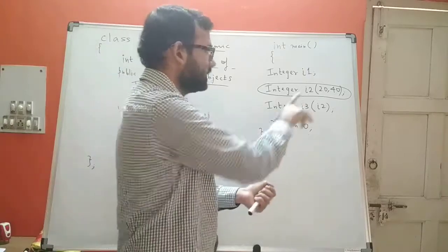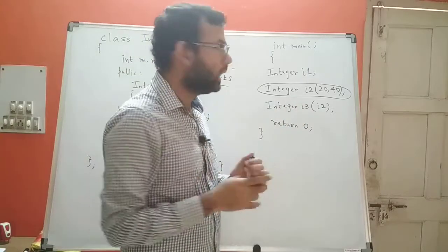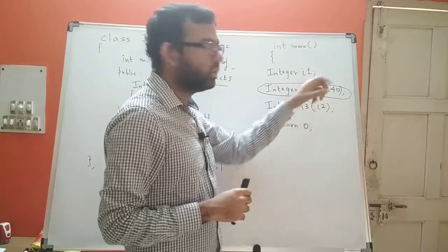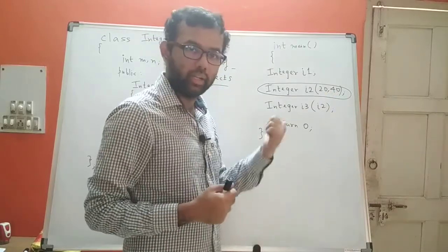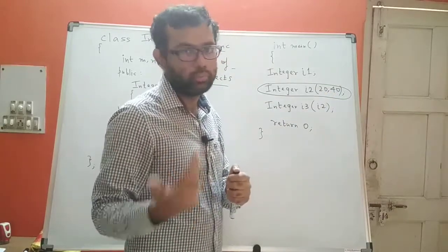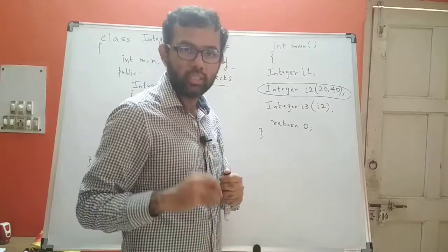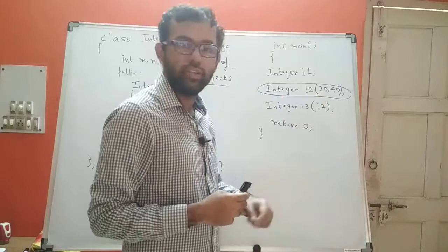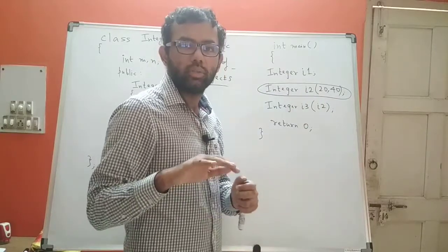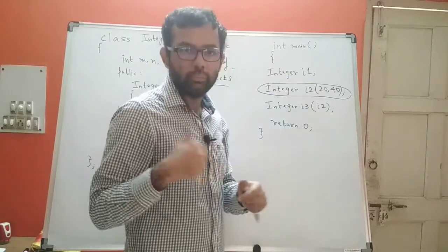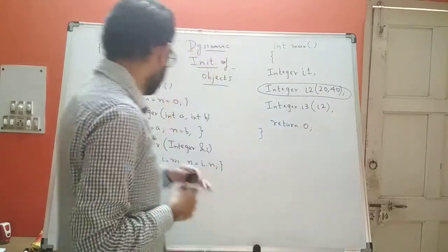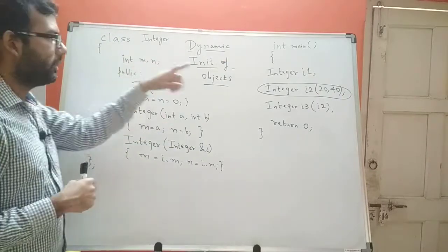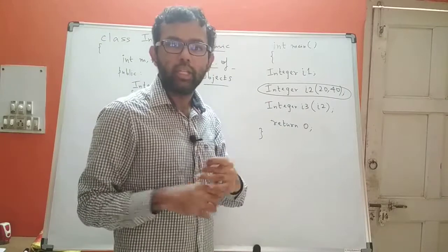Now when I have such statements, what am I doing? I am passing the value directly — I am passing 20 and I am passing 40. So every time I run this program, 20 or 40 will be passed. Now if I want to change the values passed to the constructor, I have to change it every time in this statement. So the values passed to my constructor, and as a result the values that the data members of my object i2 are getting, are fixed.